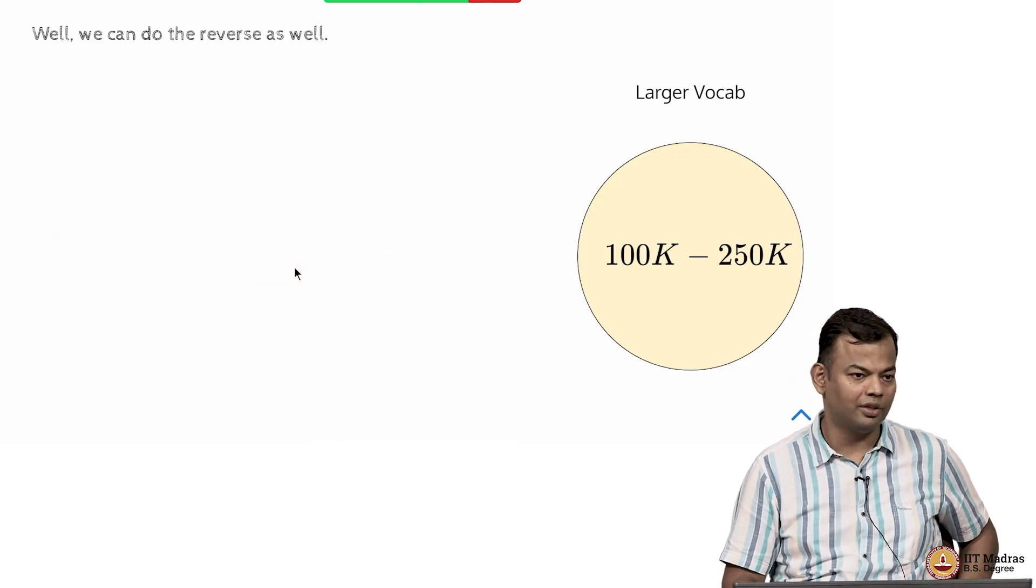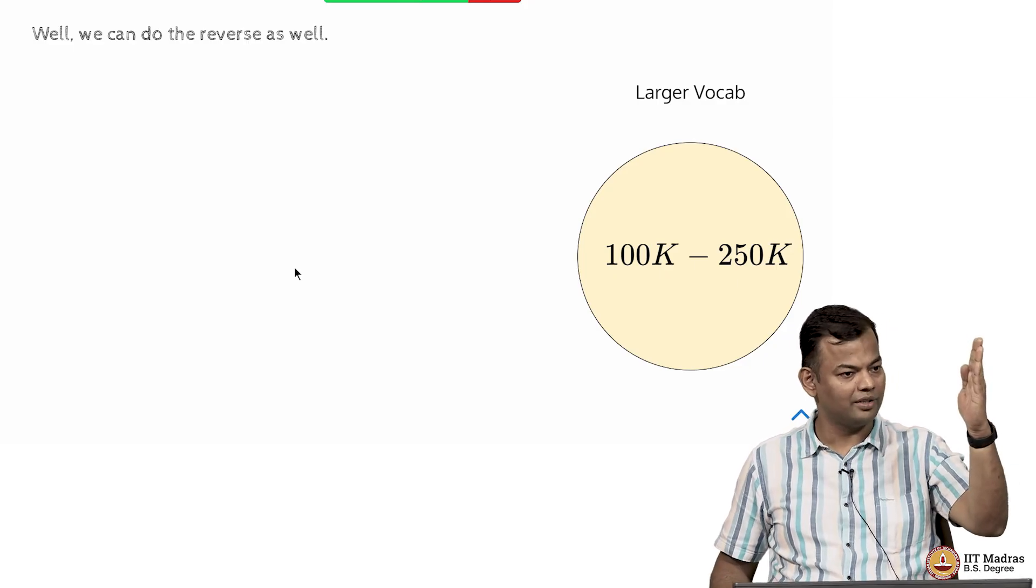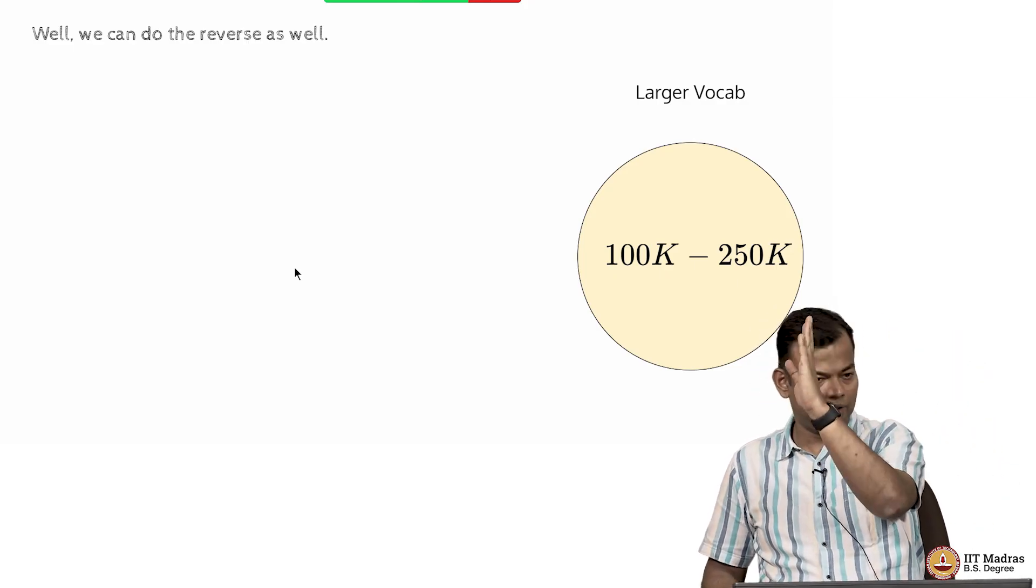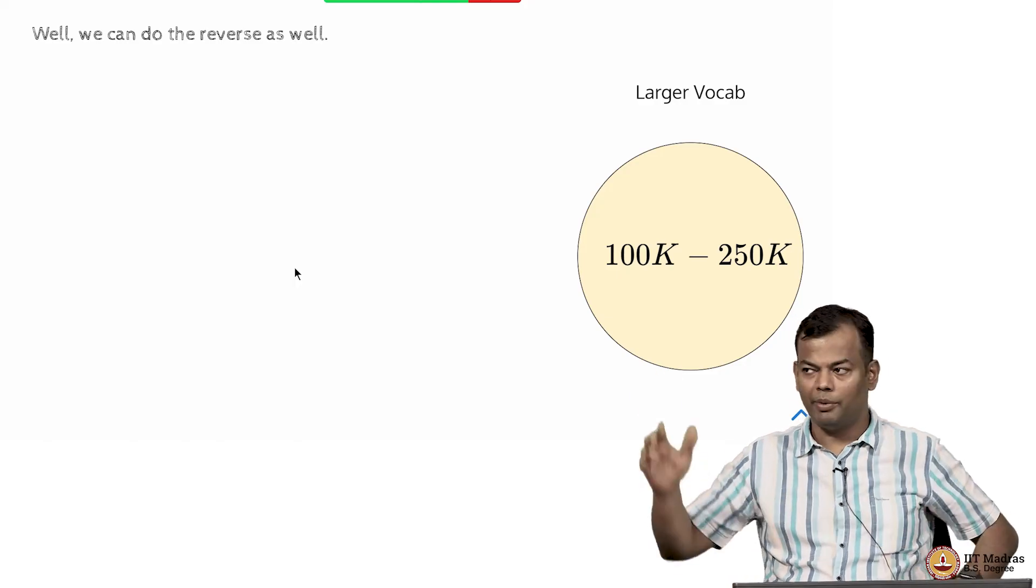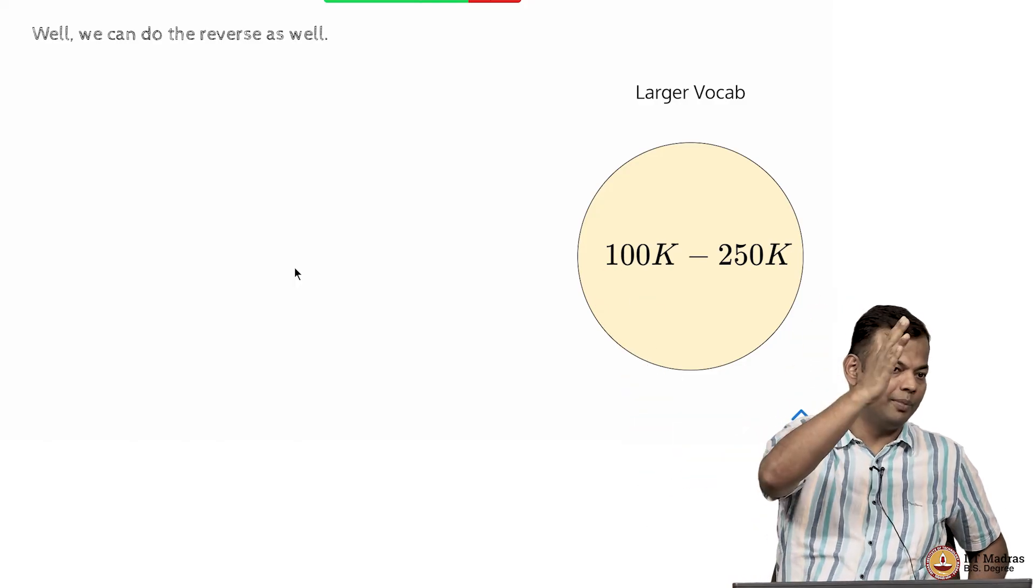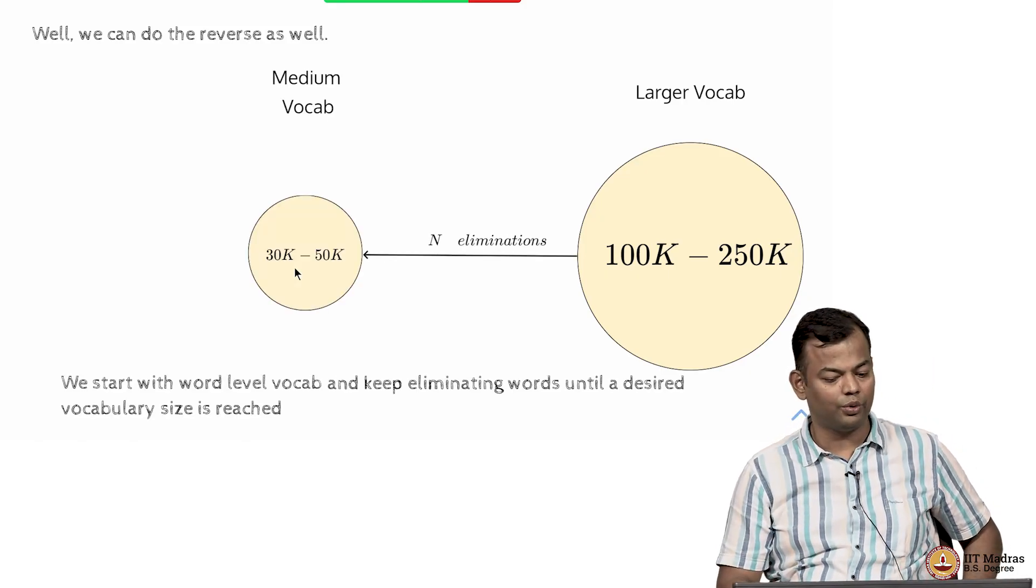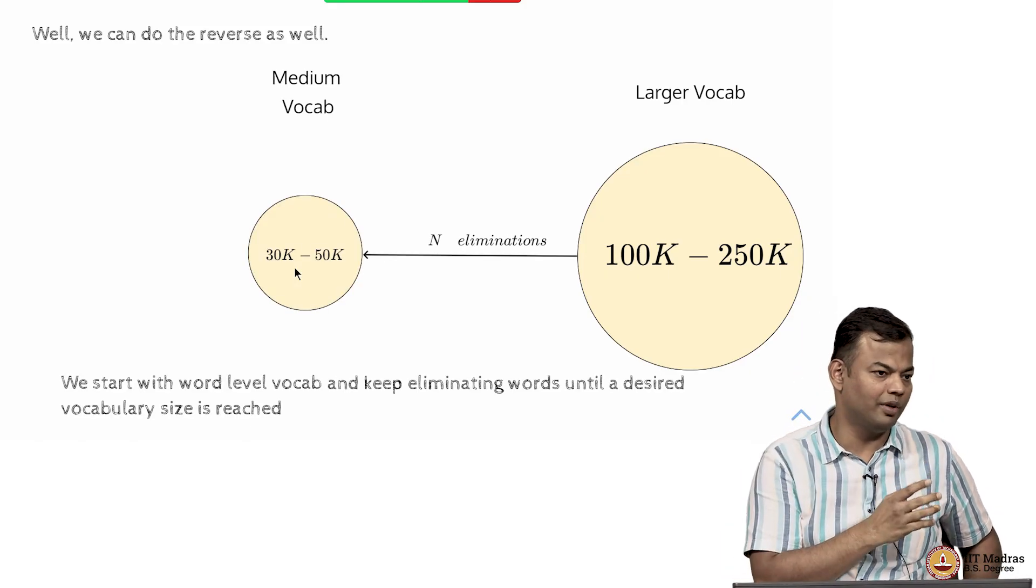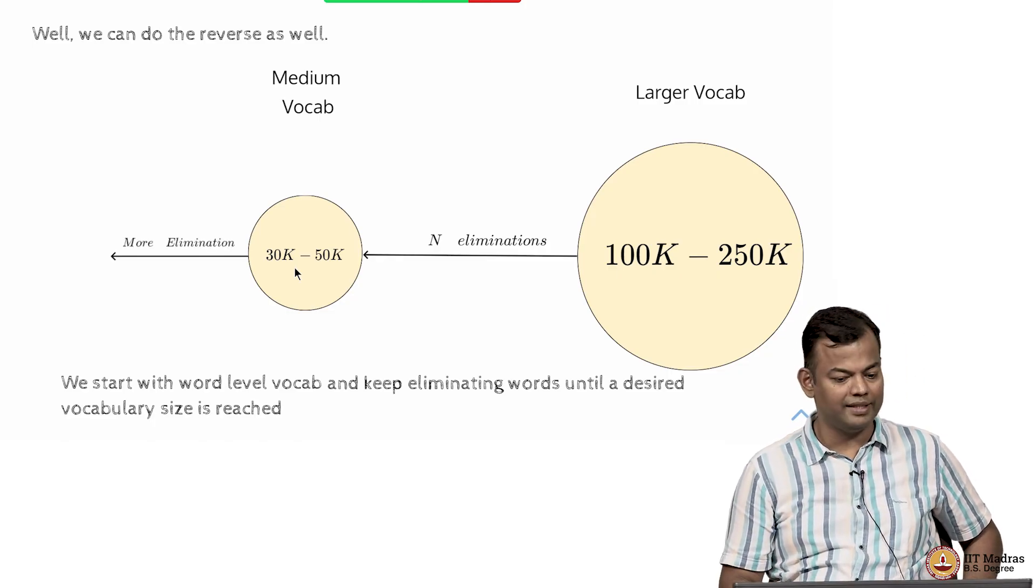Now you could also do the reverse. You could start with the large vocabulary. In this algorithm we started from characters and we kept adding till we were satisfied, 32K is my limit. But you could also start from here and then keep dropping. That is also possible. You could eliminate some words and then just say that this is the number of words that I want to retain.